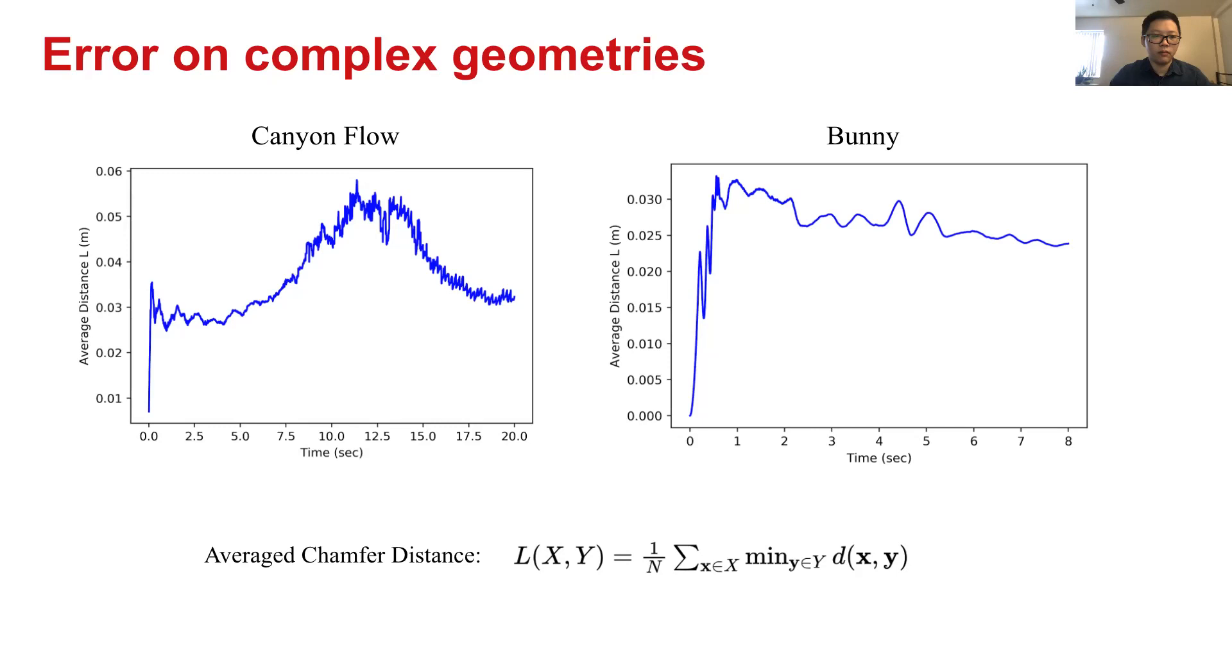As shown here, in both the canyon flow and bunny, the error level is able to be maintained in a small number that is for canyon flow that is 0.05 meters average for each particle and for bunny is approximately 0.03. This also indicates that our model can remain stable and converge in even very complex geometries that are beyond training data distribution.